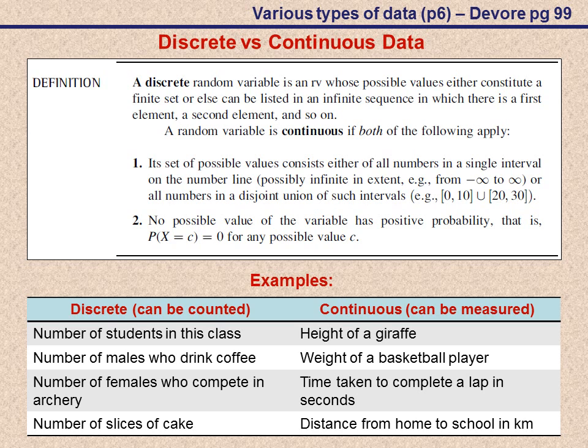A discrete variable doesn't necessarily have to be an integer value. We can also have decimal values for discrete variables but the big important thing to remember is that it can only take on certain values, not all possible values in an interval.